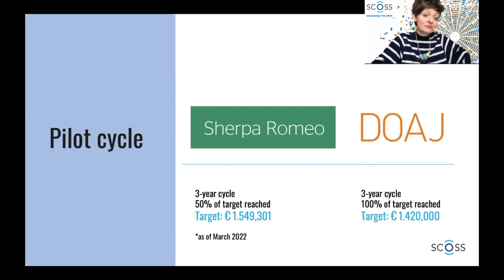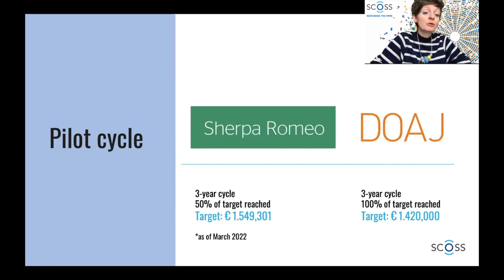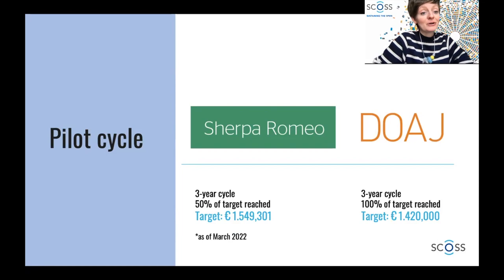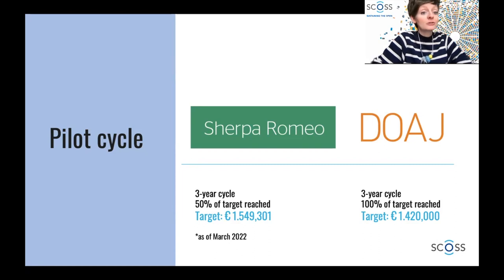In our pilot cycle, we had Sherpa Romeo and DOAJ — the Directory of Open Access Journals. DOAJ actually reached its target, which we are very happy to see, whereas Sherpa Romeo is still at 50 percent and still needs our support. Reaching a pledging target through SCoS doesn't mean the infrastructure is sustained forever — it's just the beginning of a very long journey. But we are happy to facilitate at least the first step in this hopefully long-term sustainability.